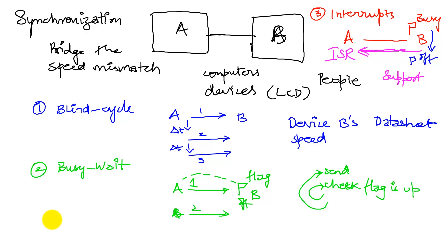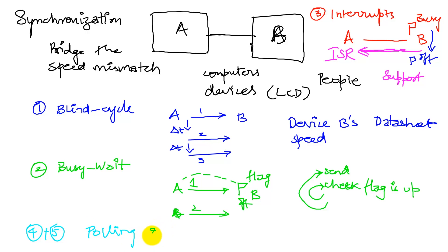By the way, there are two other communication ideas used in most advanced systems: they're called polling and direct memory access, or DMA. We will not be looking at those in this class, but you will encounter them if you're working with embedded systems in the future.